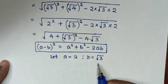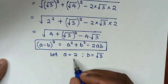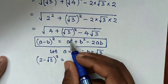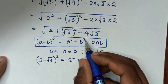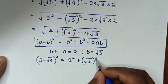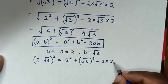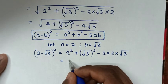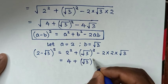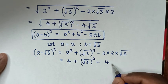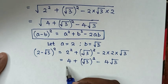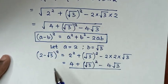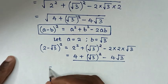So when we substitute these values into this rule, (a − b)² = a² + b² − 2ab, it will be (2 − √3)² = 2² + (√3)² − 2 times 2 times √3, which equals 4 plus (√3)² minus 4 times √3. We can see this is the same as the expression under the square root.